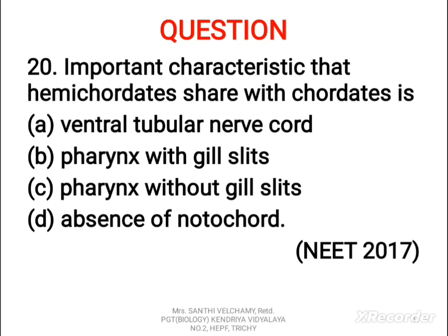Question 20: the important characteristic that Hemichordata shares with Chordata is A) ventral tubular nerve cord, B) pharynx with gill slits, C) pharynx without gill slits, D) absence of notochord. The correct answer is B — pharynx with gill slits. An important characteristic shared by Hemichordates and Chordates is the presence of pharyngeal gill slits. The gill slits are dorsally present in Hemichordates whereas lateral in Chordates.